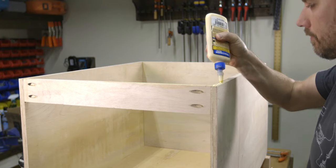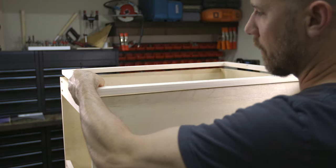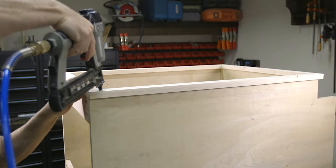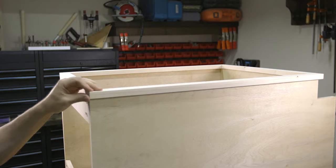The face frame can be attached in many different ways. Let's look at three methods. The first and easiest method is to add glue and then add a few face nailed brads to hold the frame into position while the glue dries. And this is the method I'm going to be using on this cabinet.